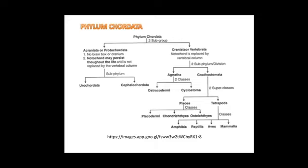The salient features of Phylum Chordata include the presence of a nerve cord, notochord, and gill slits — the three main basic characteristics. Phylum Chordata is divided into two subgroups: Acraniata and Protochordata. 'A' means absence of cranium; cranium is the brain box.